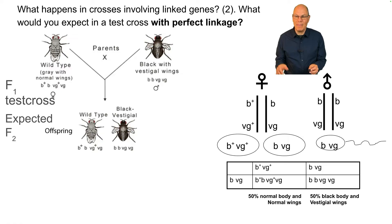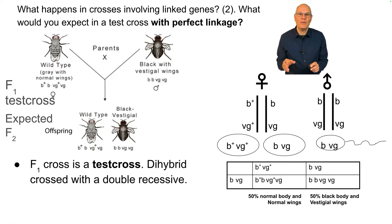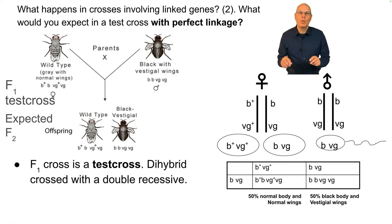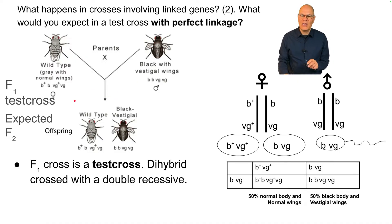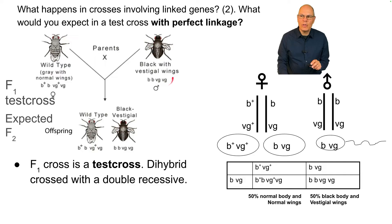What if they were perfectly linked and never separated? The method here is a little different than in a Mendelian cross — we're not doing a dihybrid cross, we're doing what's called a test cross. In a test cross, a dihybrid (B+B, VG+VG) is crossed with a double recessive. The double recessive is the male, and the female is the dihybrid.